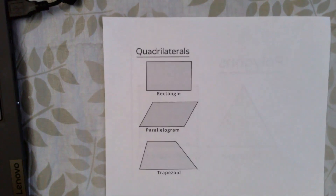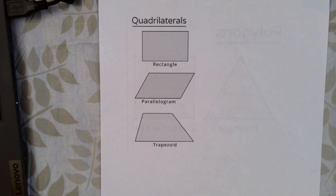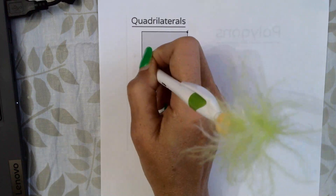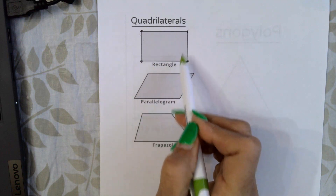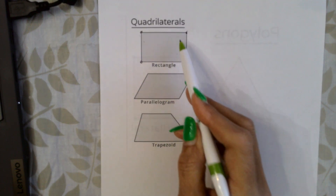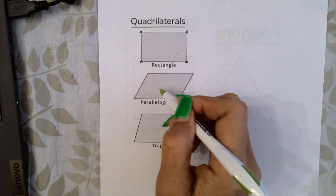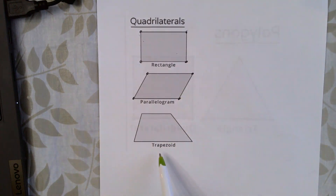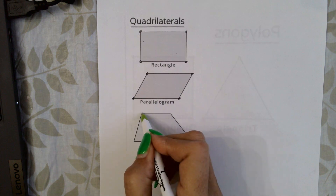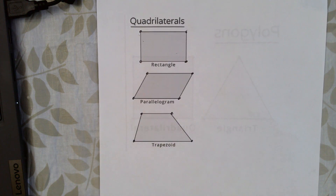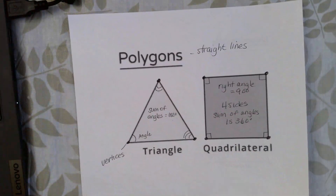Let me show you some examples of quadrilaterals. You have the square and the rectangle — both have four vertices where the line segments meet. A parallelogram is like a rectangle that the wind blew, so we no longer have four right angles, but the sum of the angles is still 360 degrees. And this is a trapezoid — still has four vertices where the line segments connect to make the quadrilateral. So for this unit on similar figures, we'll be looking at triangles and quadrilaterals.